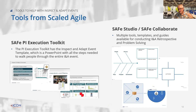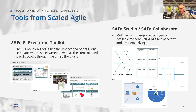I want to shift gears a bit to some tools for inspect and adapt. Scaled Agile provides us several different things. There's the Safe PI Execution Toolkit, which has a complete inspect and adapt template. It has all the PowerPoint you could possibly need to orchestrate the system demo and walk people through problem solving. It's a great tool to use when you're prepping your problem solving facilitators, walking them through the problem solving steps as outlined in this PI Execution Toolkit.